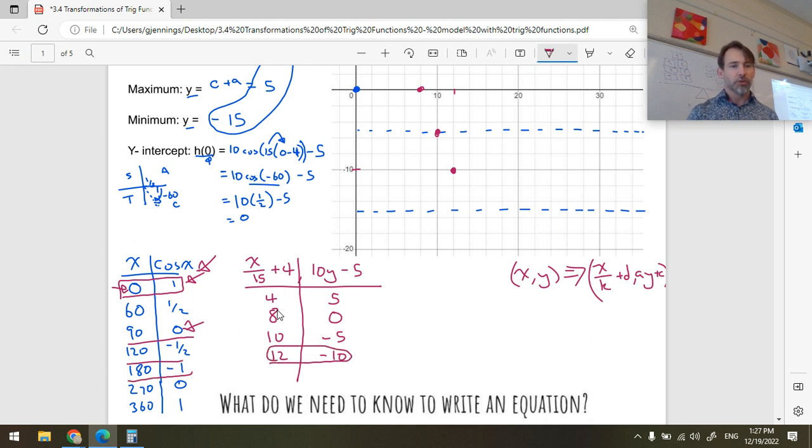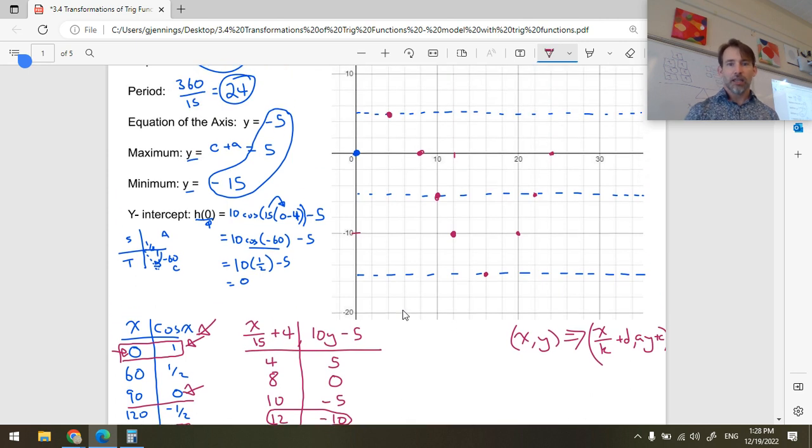180. So now we're down to the minimum of cosine. Cosine reaches its minimum at 180. So we have 180 divided by 15. Oh, that's hard. Do 180 divided by 30 gives you 6 and then times 2 is 12. Your calculator will tell you that 180 divided by 15 is 12. Okay. Plus 4, 16. 10 times negative 1, negative 10. Negative 10 minus 5, negative 15. Okay. So that's down here at 16, negative 15. And then I can see by symmetry, I'm going to get that point. And then I'm going to get this point. And then I'm going to get that one.